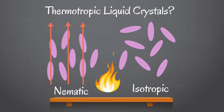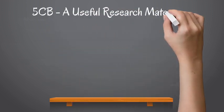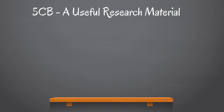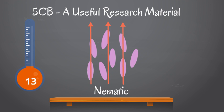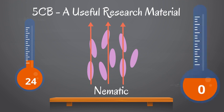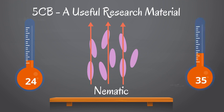A thermotropic liquid crystal that is widely used in research is 5CB. 5CB is a man-made liquid crystal. It was synthesized in the hopes that it would be nematic at room temperature. The nematic temperatures of 5CB are between 24 degrees Celsius and 35 degrees Celsius.